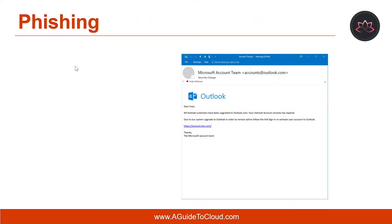Phishing is a technique a hacker uses to retrieve sensitive information such as a user's account credentials or credit card number. For example, a user receives an email that appears to have been sent from a trustworthy source such as a bank or the user's IT administrator. Phishing attempts often entice users to click a link to a malicious website that looks legitimate except for the URL. Upon entering the site, users may be directed to enter personal information that hackers can then use to their advantage.